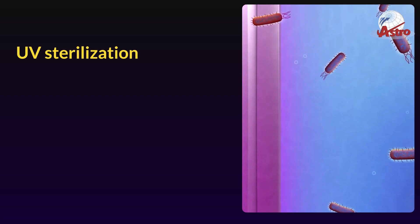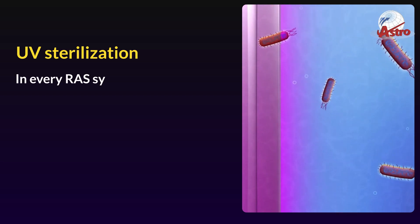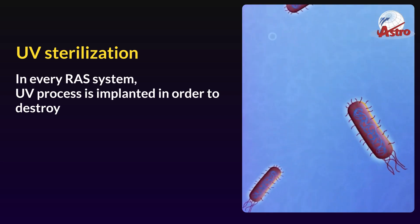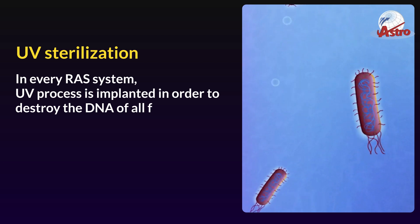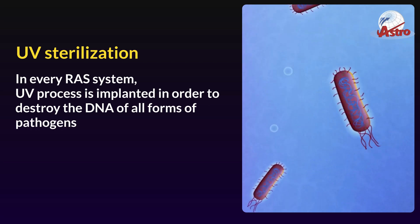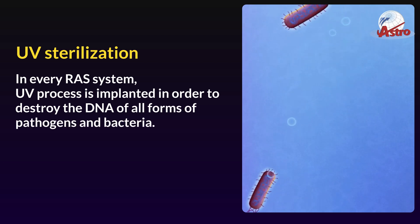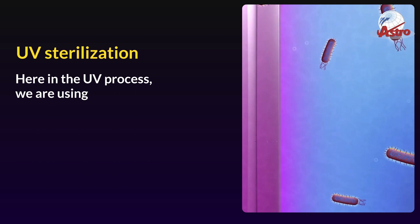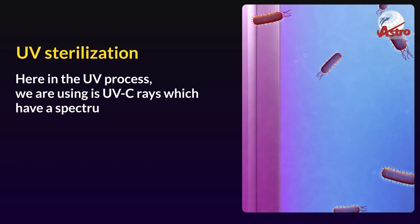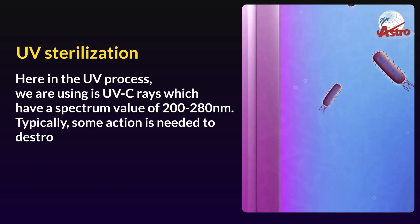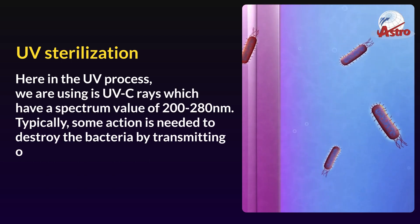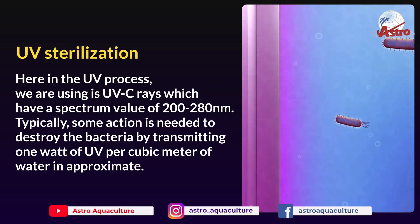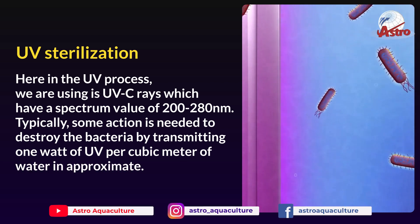UV sterilization: In every RAS system, the UV process is implemented in order to destroy the DNA of all forms of pathogens and bacteria. In the UV process, we use UVC rays, which have a spectrum value of 200 to 280 nanometers.